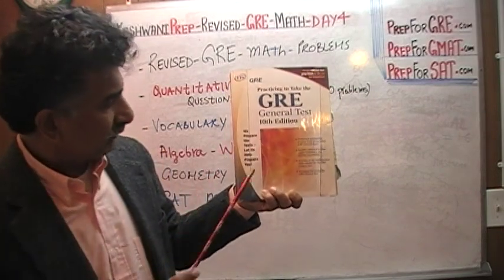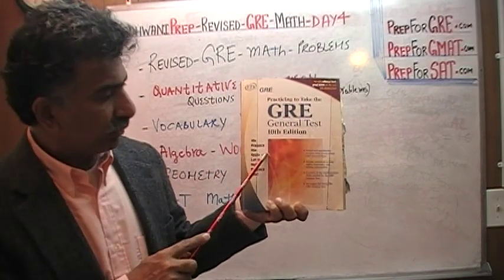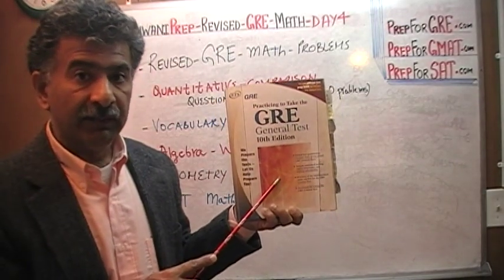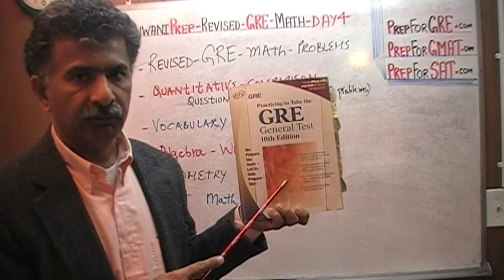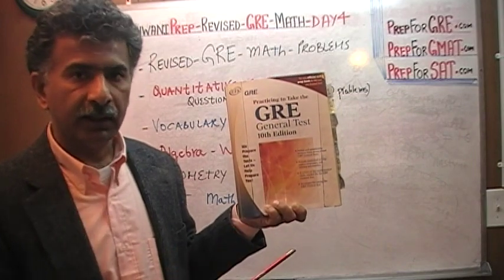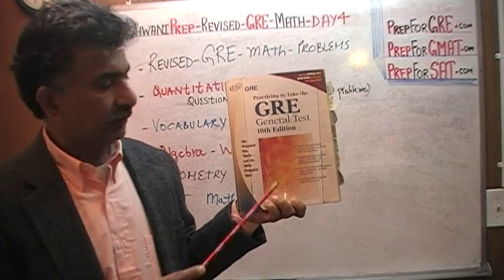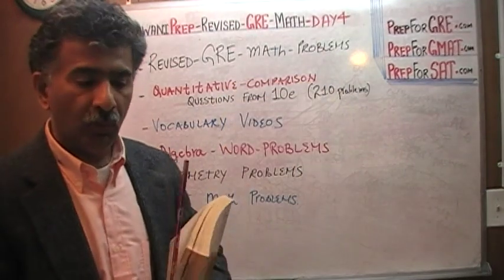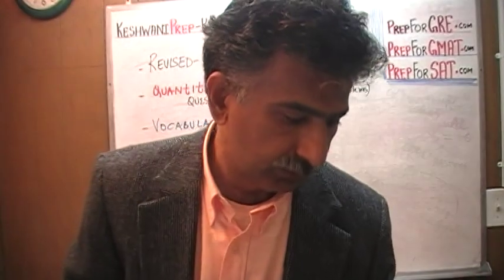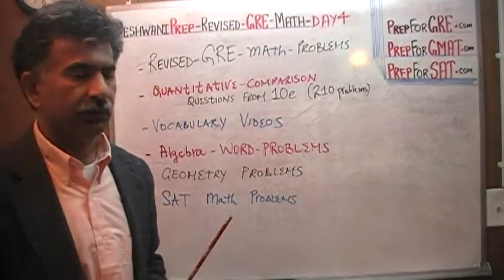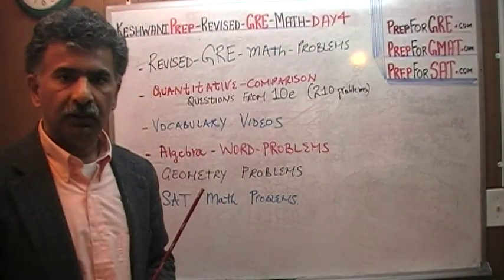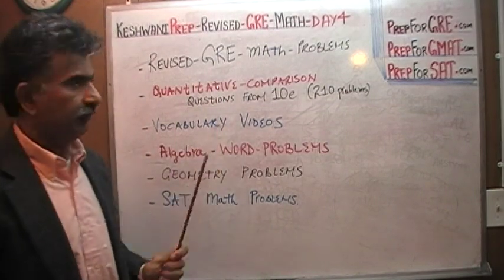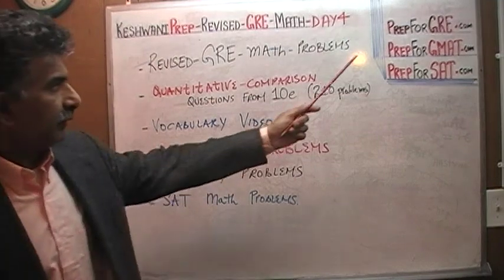This 10th edition book contains seven exams. Each exam has 30 quantitative comparison questions, and therefore there are 210 quantitative comparison questions in this book. If you wish to practice more on those questions, I have solved all 210 questions and posted videos on YouTube. Just go to my channel and search for GRE quantitative comparison questions.